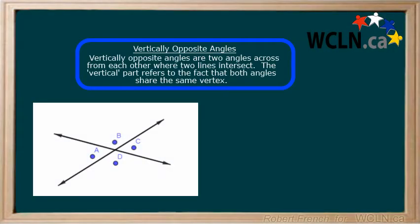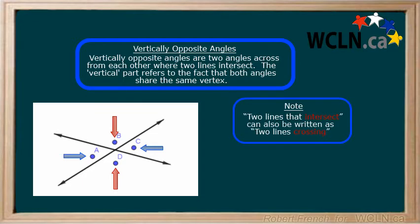Vertically opposite angles are two angles across from each other where two lines intersect. Two lines that intersect can also be described as two lines crossing.